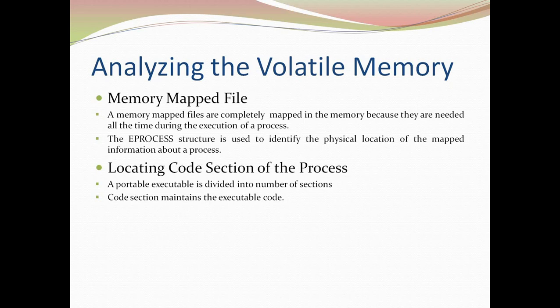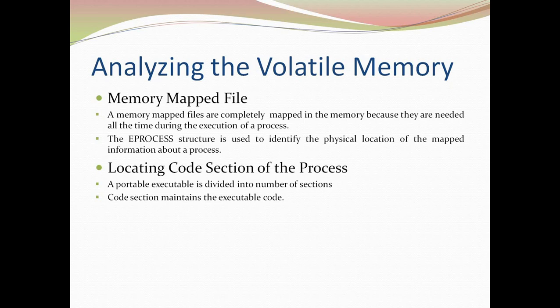A portable executable file is divided into sections. The header section maintains metadata — the process name and size occupied by the PE file. The code section, also called the text section, contains the source code of the portable executable file. The data section contains data required for the running of the PE file. We need to locate the code section in volatile memory for that particular portable executable file.